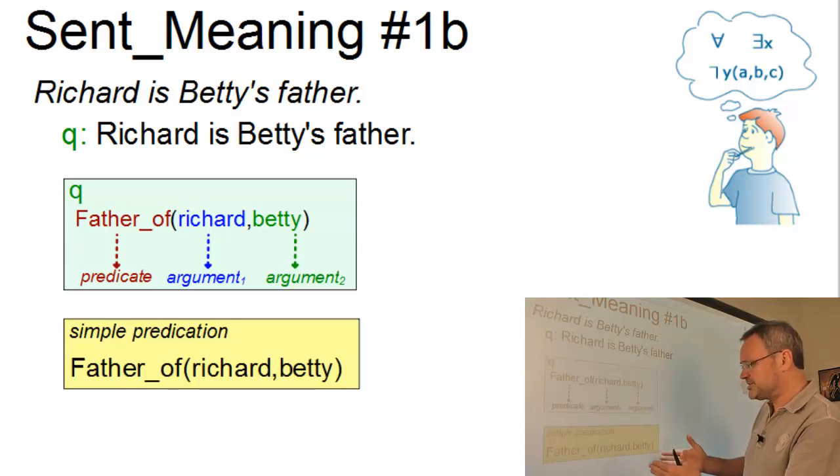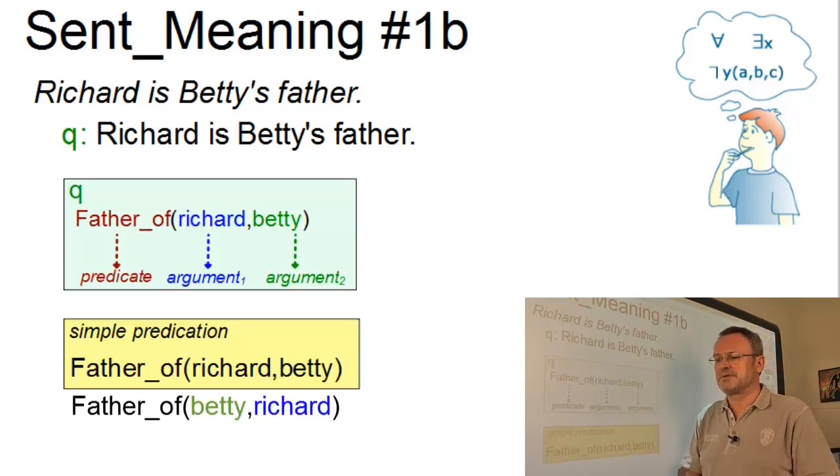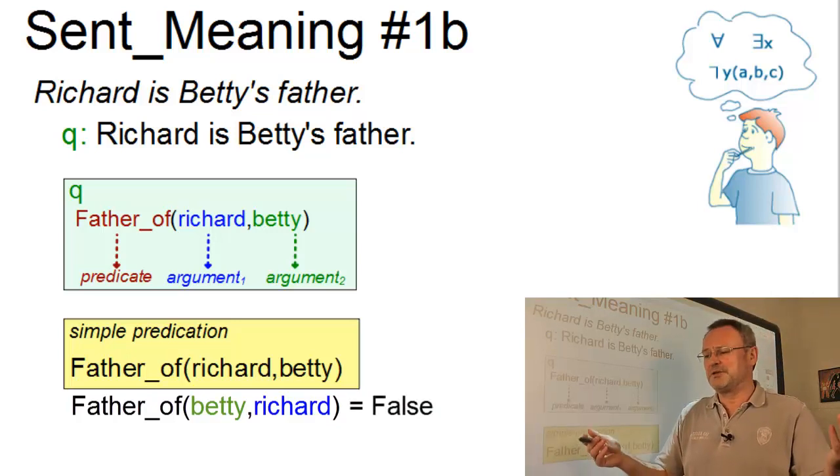And this relationship depends on the sequence of the arguments. If we reverse the two arguments Richard and Betty, we have a situation where Betty would be Richard's father. And that of course would result in a false proposition because we should assume that Betty is female.